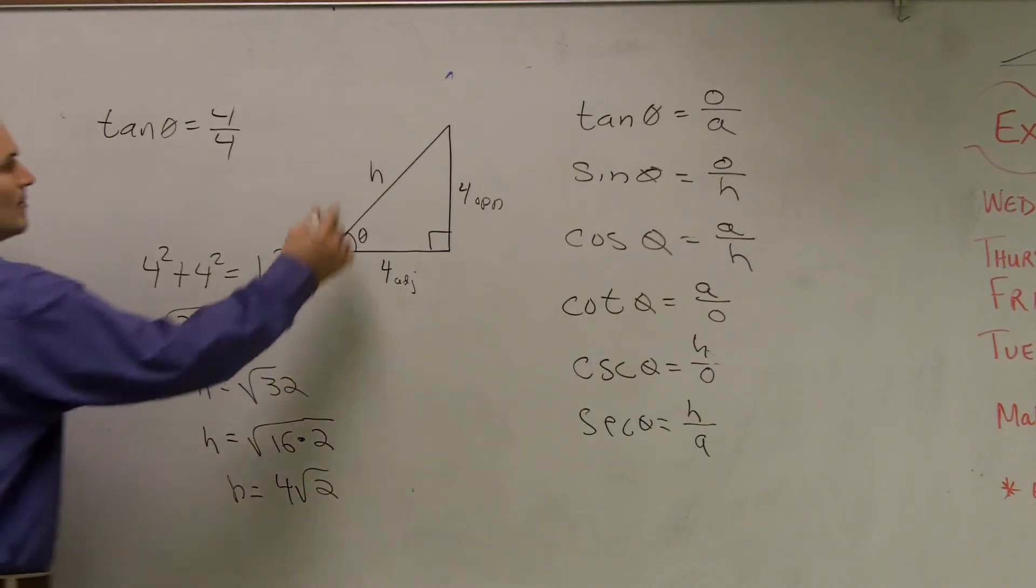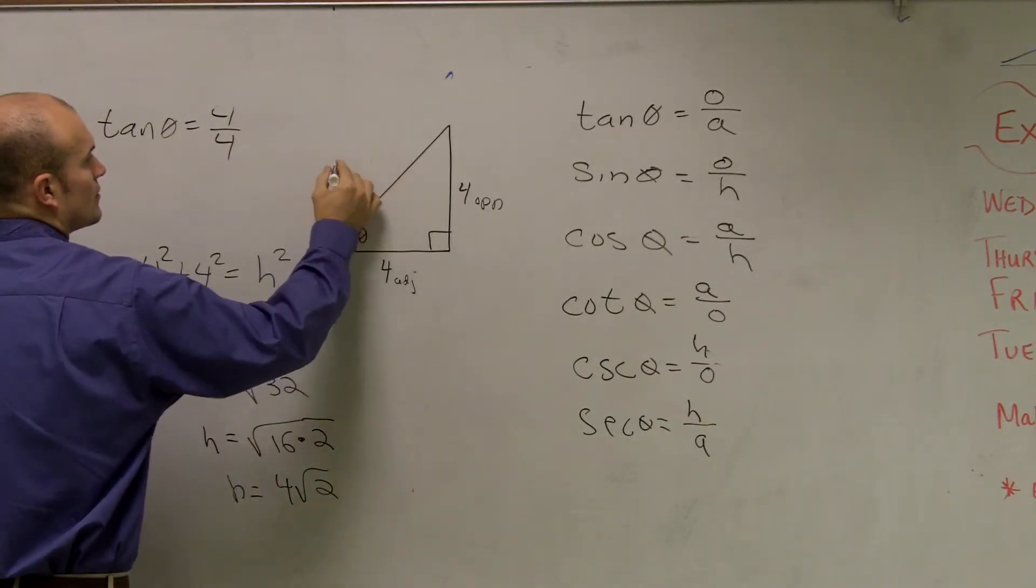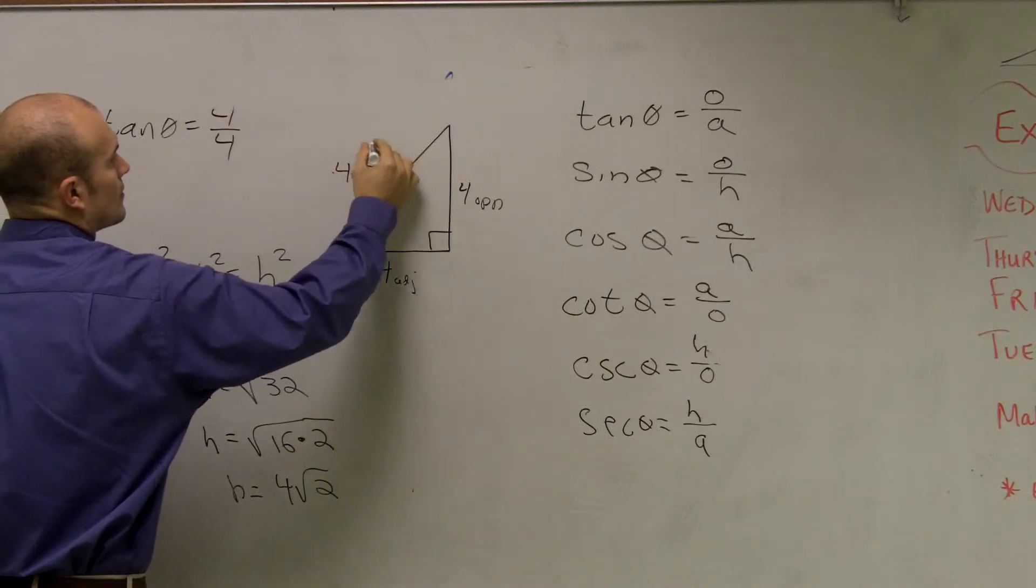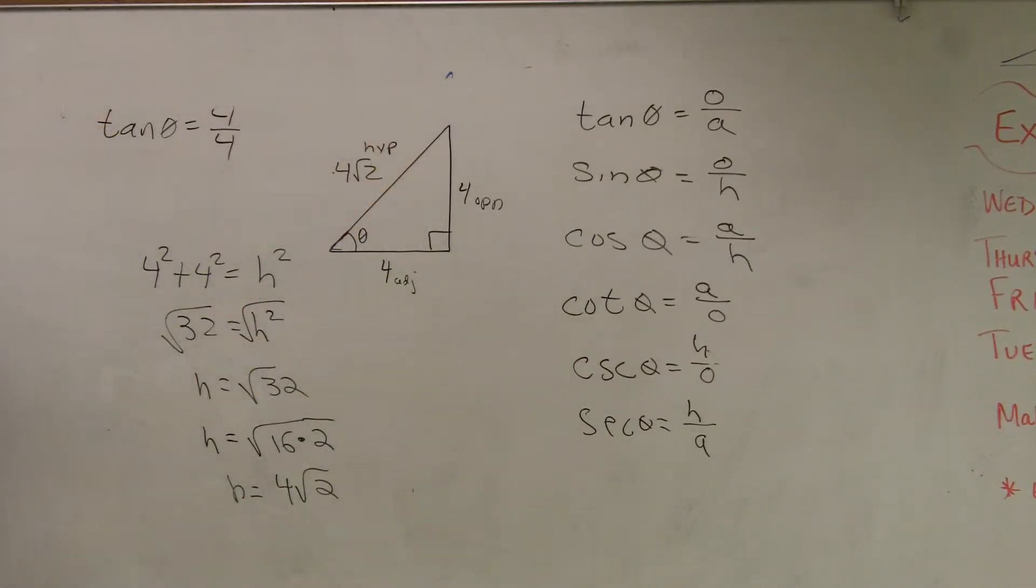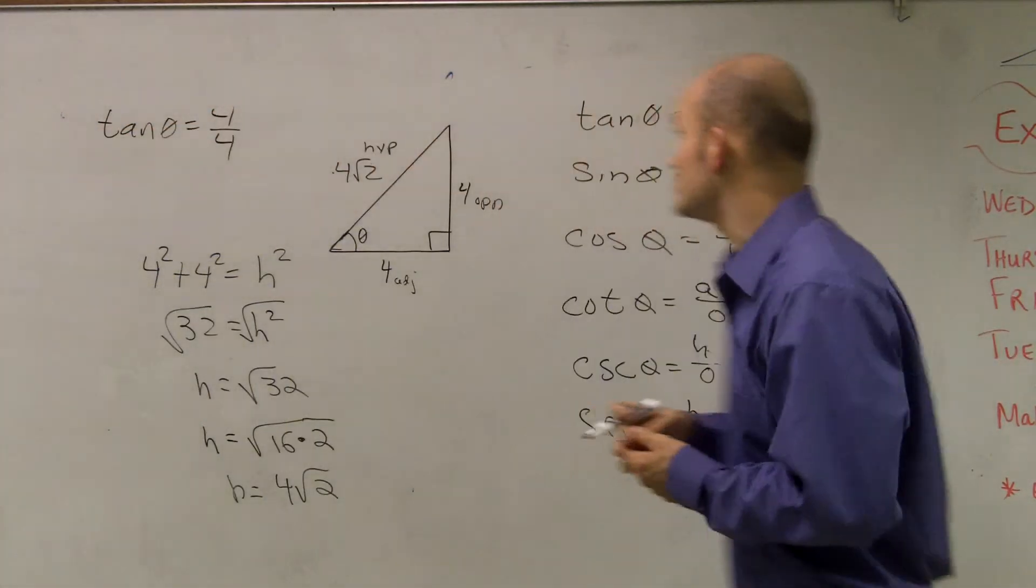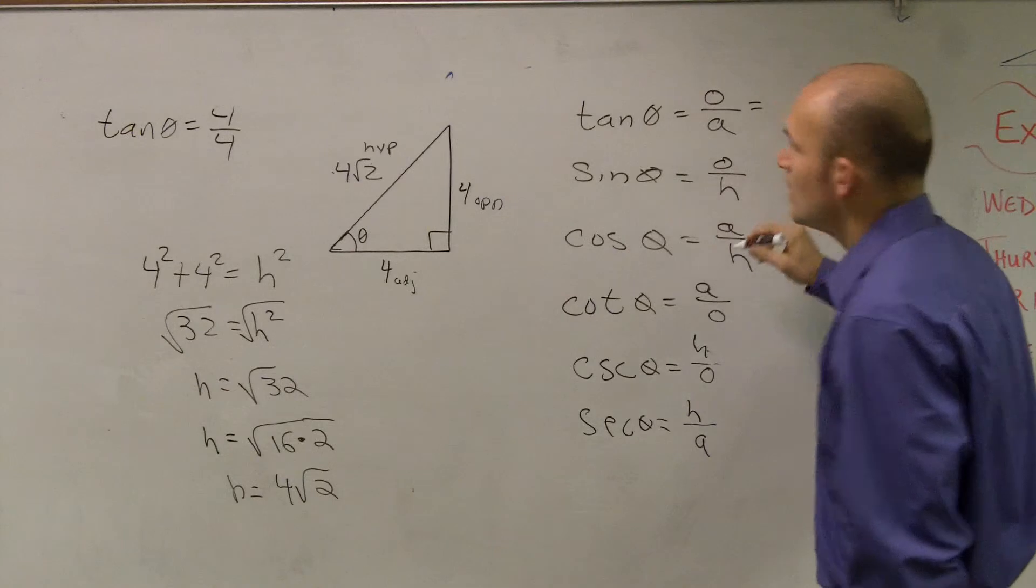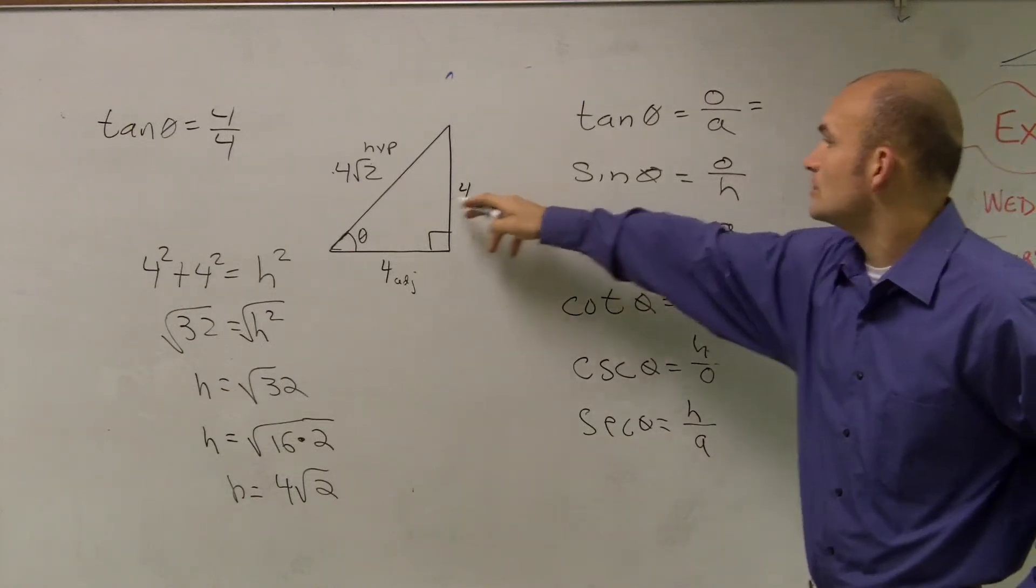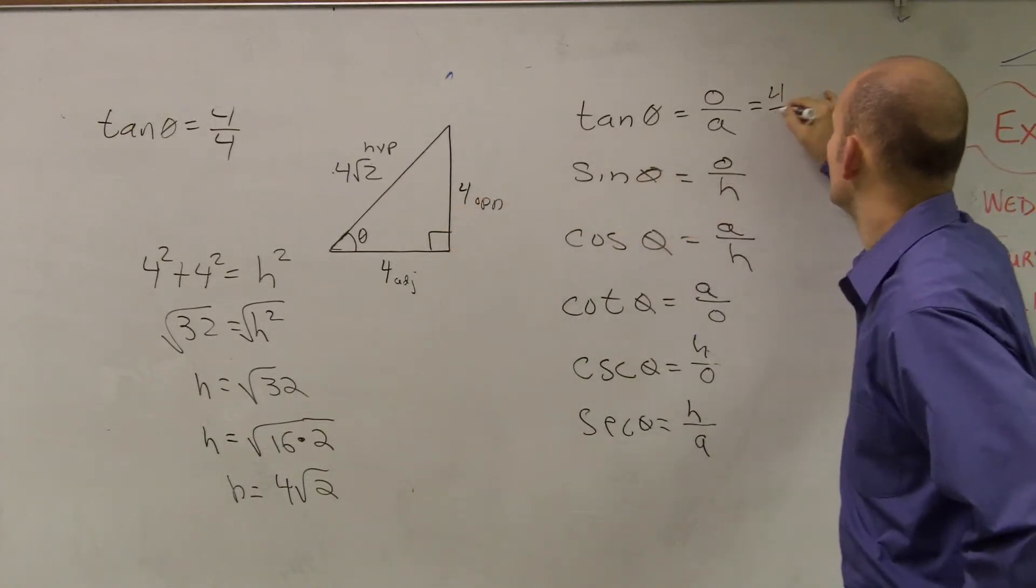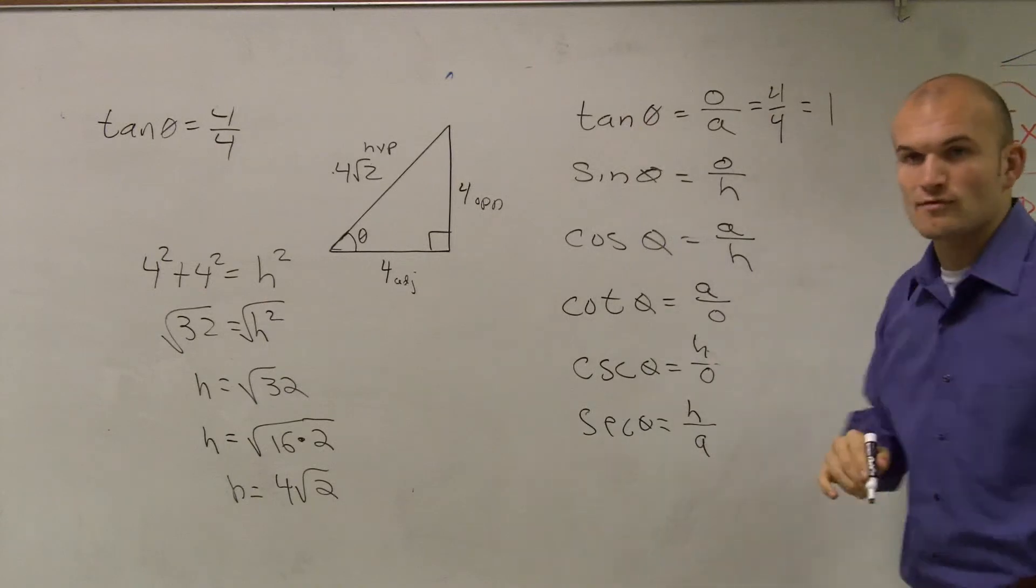So therefore, now I can say my hypotenuse is 4 radical 2. So now, all we're going to do is just plug them in into our ratios. Tangent is opposite over adjacent, 4 over 4 equals 1.